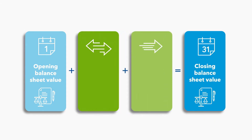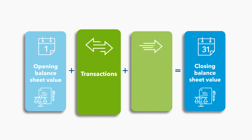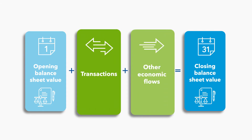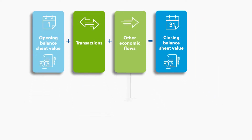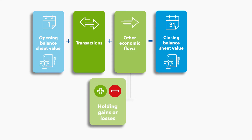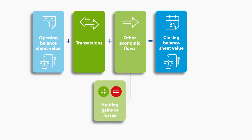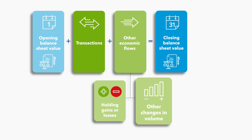We separate economic flows into transactions and other economic flows. There are two types of other economic flows in macroeconomic statistics: holding gains or losses, also referred to as re-evaluations or price changes, and other changes in the volume of assets and liabilities, also referred to as other volume changes.